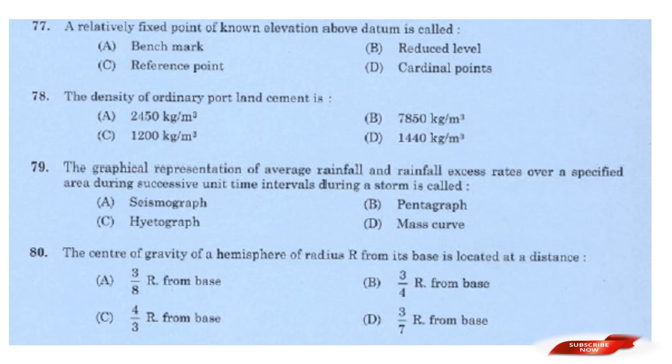Question: A relatively fixed point of known elevation above the datum is called? Options: Benchmark; Reduced level; Reference point; Cornal level. Answer: Option A — Benchmark. The density of ordinary Portland cement is 1,440 kg/m³. Answer: Option D — 1,440 kg/m³.